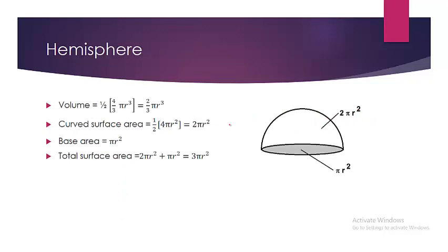Hemisphere — what is a hemisphere? A hemisphere is when you take a full solid sphere and cut it in half. That is a semi-sphere or hemisphere. The volume of the hemisphere is equal to half of the total volume of the sphere, because a hemisphere is nothing but half of it. Half of 4/3 π r³ is 2/3 π r³. So, volume of a hemisphere is 2/3 π r³.